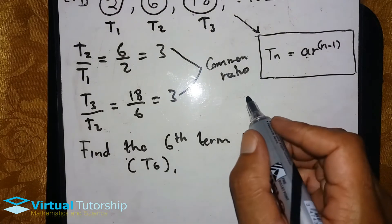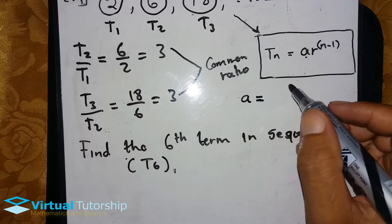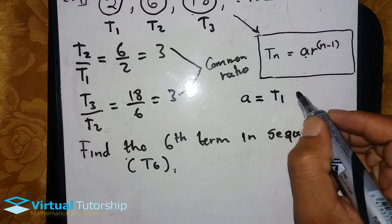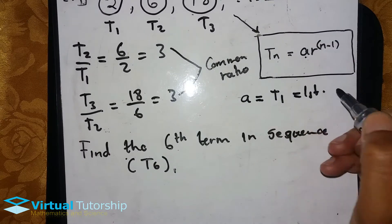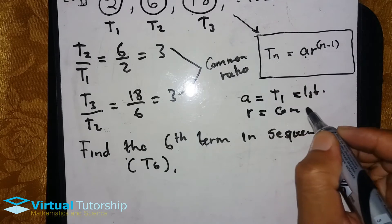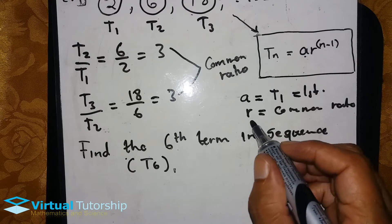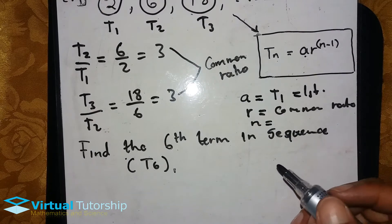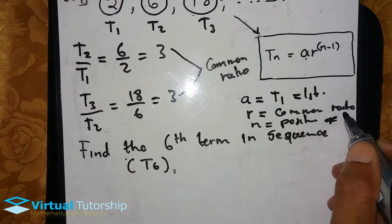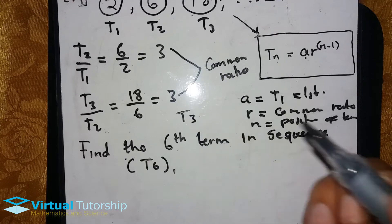In this formula, just like the arithmetic sequence, T_n is equivalent to T1, which is the first term. Then r represents the common ratio. And n represents the position of the term — for instance, T3 means n equals 3.